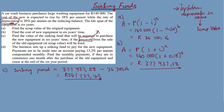Find the monthly payments if they are to commence one month after the purchase of the old equipment and cease at the end of the six-year period. For part D, we need to find the monthly payments into the sinking fund. Since payments commence one month after purchase, this is a future value annuity. We calculate the monthly payment amount.